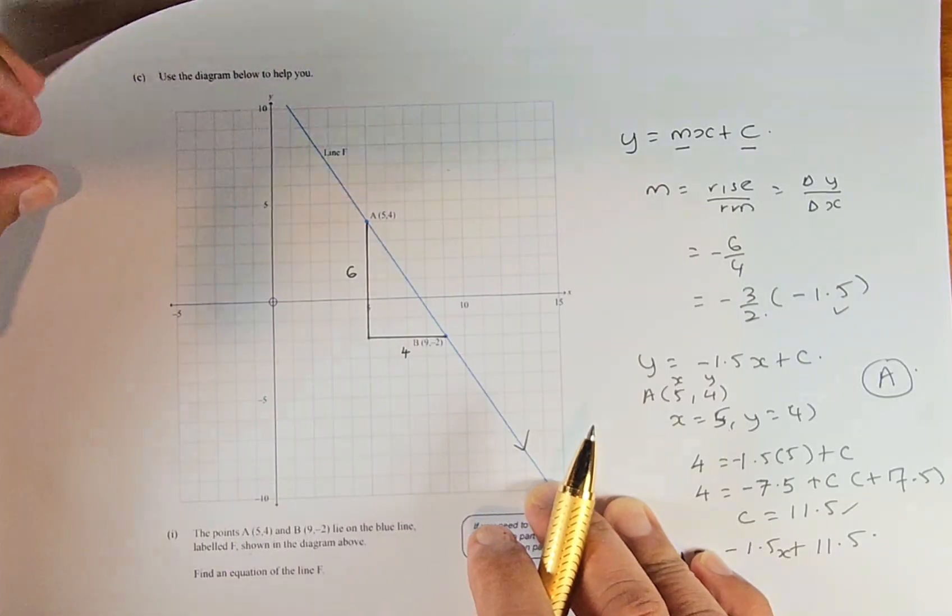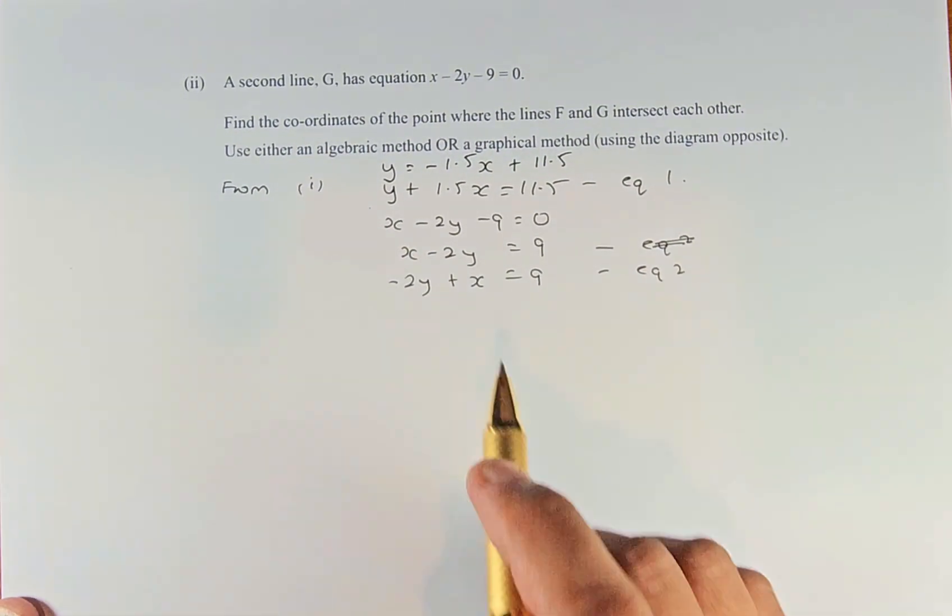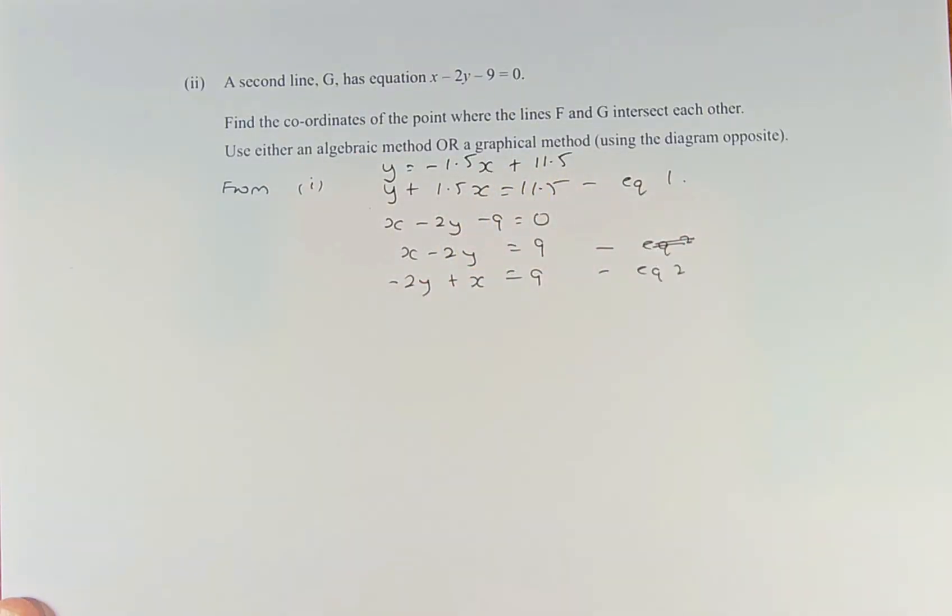What we've done is transferred the equation y = -1.5x + 11.5. Now we're going to work through the equation.